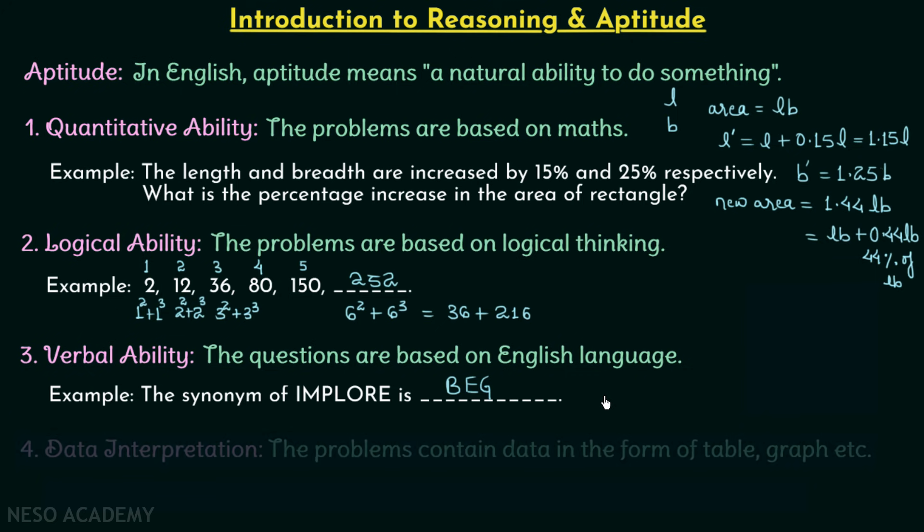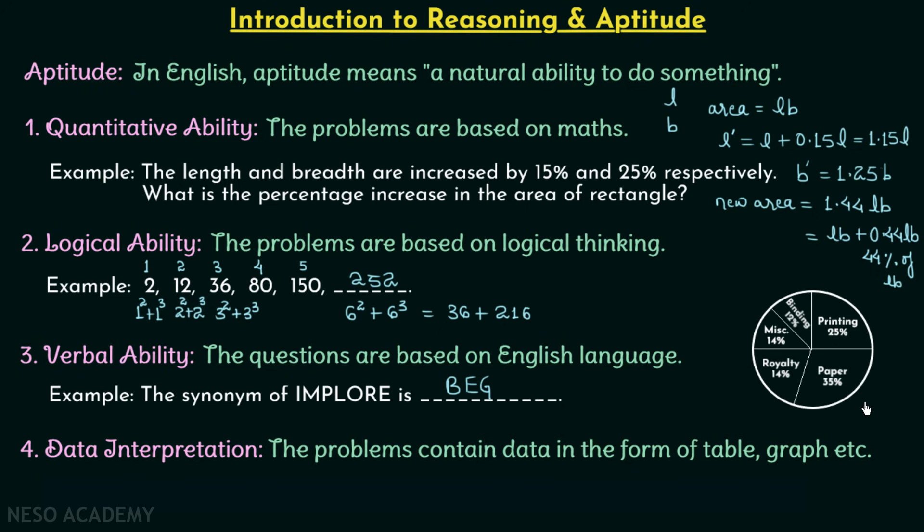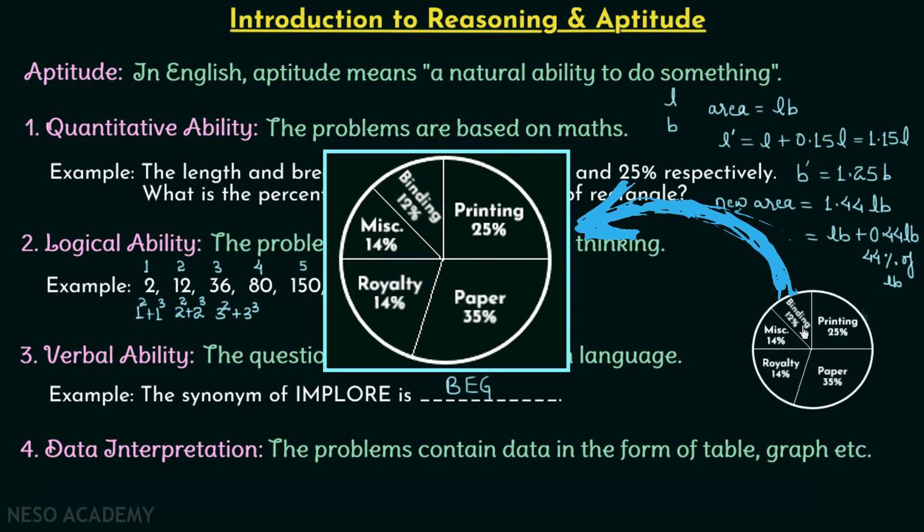Let's move on to our final class, which is Data Interpretation. In this section, the problems contain data in the form of tables, graphs, pie charts, etc., and using the data we need to find out answers of the given questions. For example, here we have a pie chart, and this is the pie chart for a printing press having different expenses listed. The question is: the royalty on the book is less than the binding charges by how many percent? This we are not going to solve now, but if you want you can give it a try and once you have your answer post it in comment section.